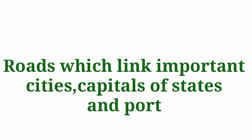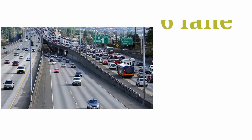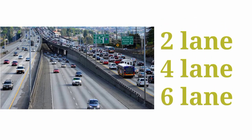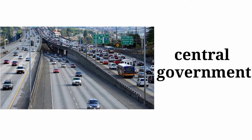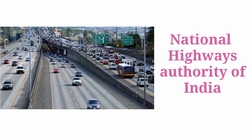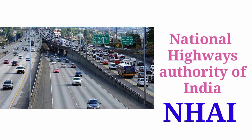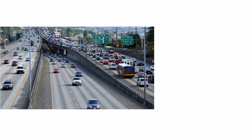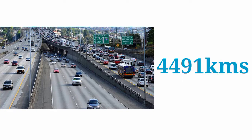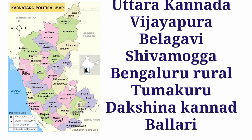The first type is national highway. The roads which link important cities, capital cities of states, and ports are called national highways. These are well-planned and wide roads, seen in two-lane, four-lane, and six-lane configurations. They are under the authority of the central government and managed by the National Highway Authority of India (NHAI). At present, there are 14 national highways in Karnataka with a total length of 4,491 kilometers.